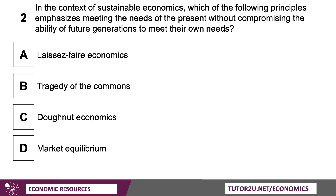Question two: In the context of sustainable economics, which of the following principles emphasises meeting the needs of the present without compromising the ability of future generations to meet their own needs? The answer is C — donut economics.